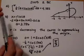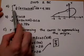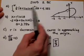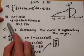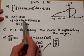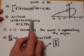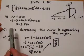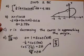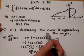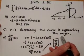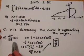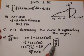Scoring: Part A is worth three points — one for the limits of integration and the one half, one for the integrand, and one for the answer. Part B is worth two points — one for your equation and one for the answer. Part C is worth two points — one for saying r is decreasing, and one for saying the curve is approaching the origin. Part D is worth two points — one for finding that theta is pi over 3, and one for the justification.